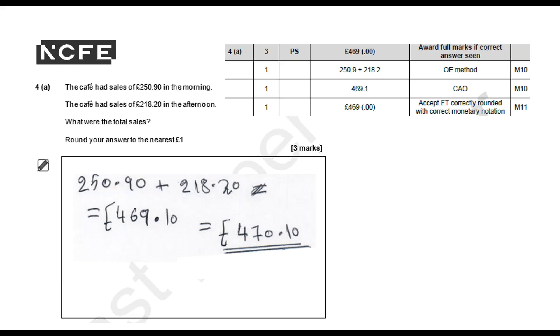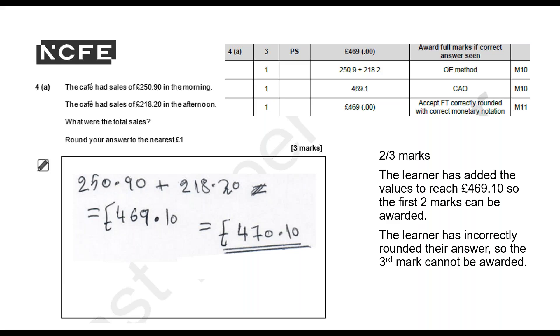Question 4A: The cafe had sales of £250.90 in the morning and £218.20 in the afternoon. What were the total sales? Round your answer to the nearest pound. Three marks available. The learner gets 2 out of 3 marks. They added the values together — that's the first mark — and came up with £469.10, which earns the second mark. However, for the final mark they appear to have a problem with rounding, rounding £469.10 to £470.10 rather than £469. So the third mark cannot be awarded.